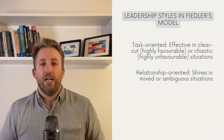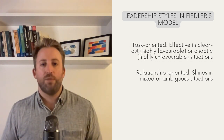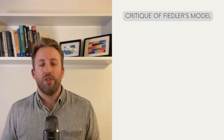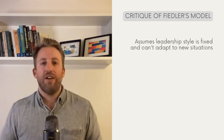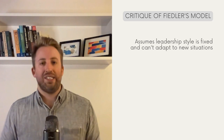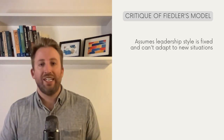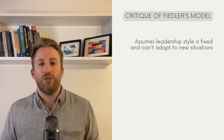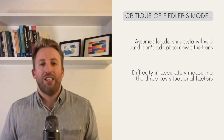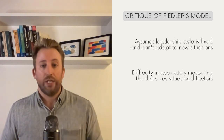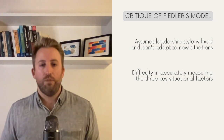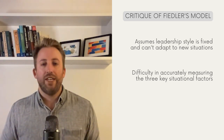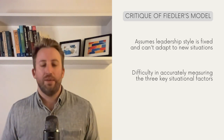That's the gist of Fiedler's theory, and there's some support for the notion that the leadership style that's most effective depends on how favorable the situation. But there are also limitations. This theory makes a significant assumption: it assumes that if you're a task-focused leader, you're always going to be a task-focused leader, and if you're a relationship-oriented leader, you're always going to be relationship-oriented, no matter what. This implies that when a situation calls for a different leadership style, you'd need a completely new leader instead of adapting the current one. Additionally, measuring the three contingency factors — leader-member relations, task structure, and positional power — is not always easy.